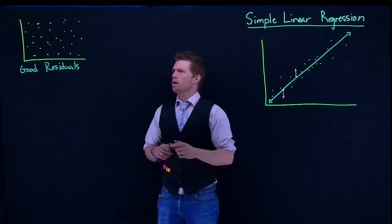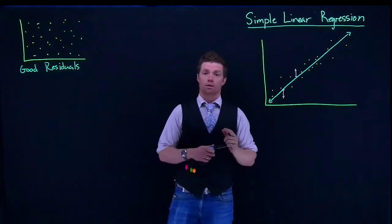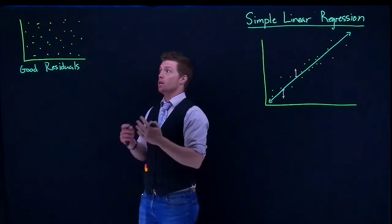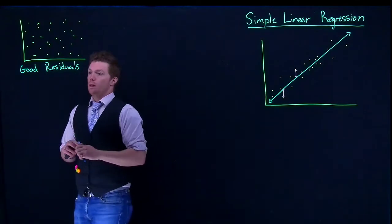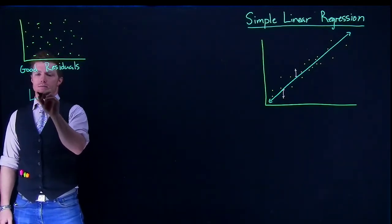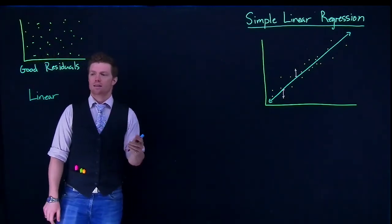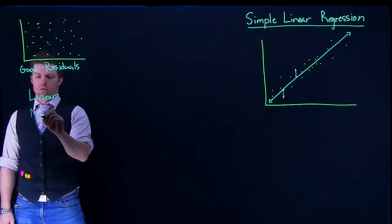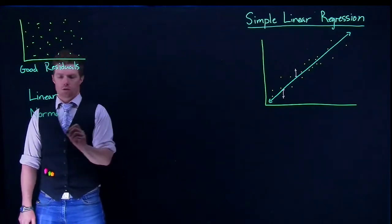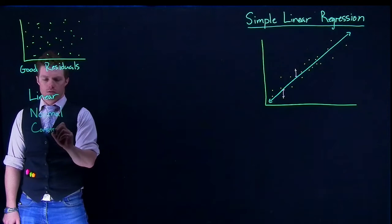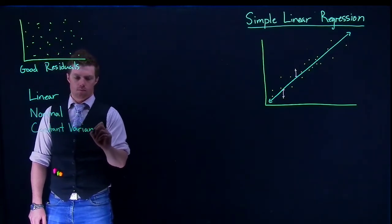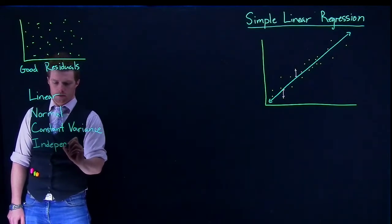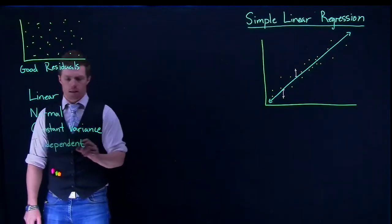When we look at our residual plots — this graphing of our errors — there are problems that can show up. We need to make sure we are not seeing five specific things within our residual plots. We want them to be linear, normal, have constant variance, be independent, and finally be centered about zero.